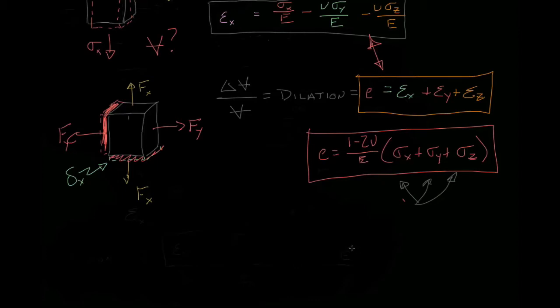Now, if we make that substitution, we see that the dilation is 1 minus 2 nu over e times 3p.